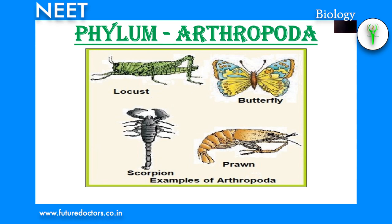Phylum Arthropoda: 'arthro' means jointed, 'poda' means foot — therefore called jointed foot. It includes the largest and most diverse group of segmented animals. They are aquatic or terrestrial and may occur as free living or parasitic forms. Examples: bed bugs, ticks, mosquitoes, etc. The body is segmented externally with distinct head, thorax and abdomen. Head bears many fused segments and sense organs. Arthropods are bilaterally symmetrical and triploblastic with organ system level of organization.